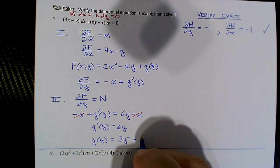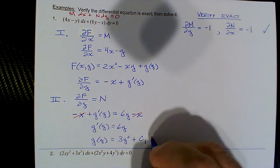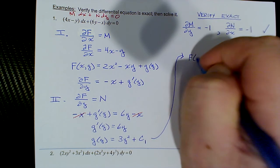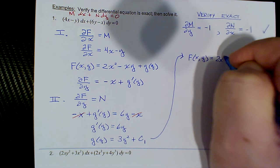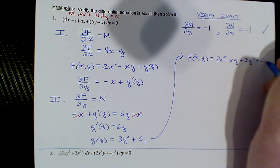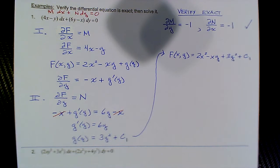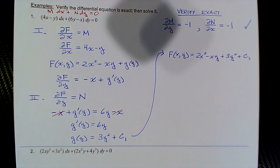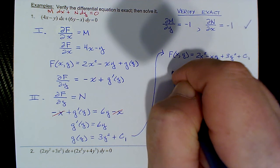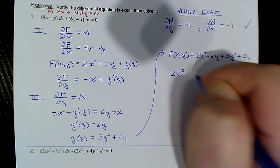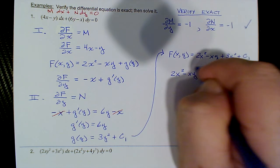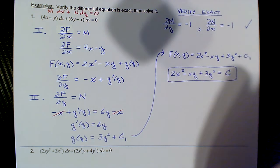Then we back substitute into f(x, y): f(x, y) = 2x² − xy + g(y) = 2x² − xy + 3y² + c₁. The general implicit solution is always just the variable portion of our function f(x, y): so 2x² − xy + 3y², and we set it equal to some constant of integration that we call C.